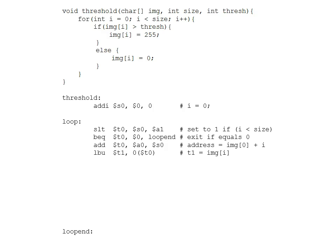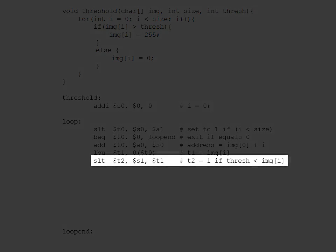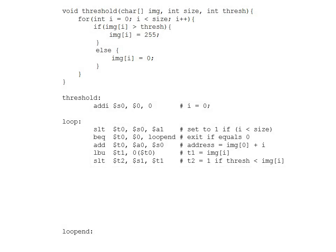MIPS doesn't have a set-on-greater-than, so instead we flip the order and use set-on-less-than: if threshold is less than the image value, that is essentially the same thing. We set temporary t2 to one if the threshold is less than the image value. If t2 is one we perform the if statement; if it's zero we skip to the else. So we do a branch-on-equal: if t2 equals zero, jump to the else label.